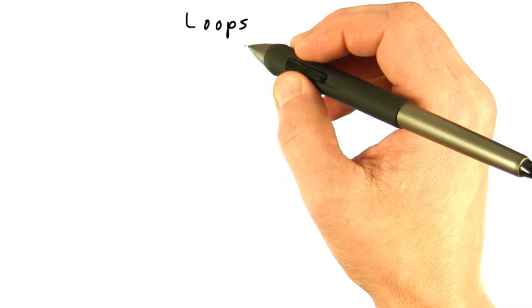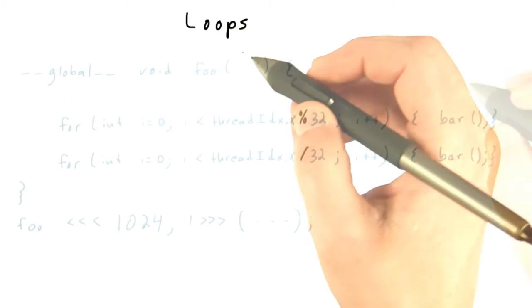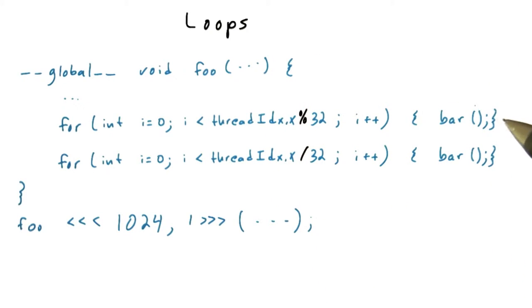So we've talked about if-then-else and switch statements as one kind of branch. Loops are another kind of branch. So here's a snippet of CUDA kernel code with two loops.